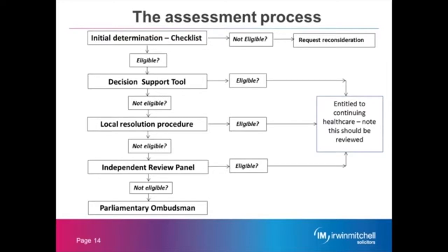When there is an indication that an individual's needs may be more than the local authority could be expected to provide in terms of social care, the assessment process will commence once a request for an assessment has been made. The flow chart on the presentation screen provides a very simple guide to the assessment process and the next steps in terms of finding an eligibility decision. The first step, before the main assessment known as the decision support tool, is for there to be an initial determination via the checklist, which is the box at the top of the slide. The checklist can be undertaken either in hospital, at home or another care setting, and is undertaken by an appropriate professional.